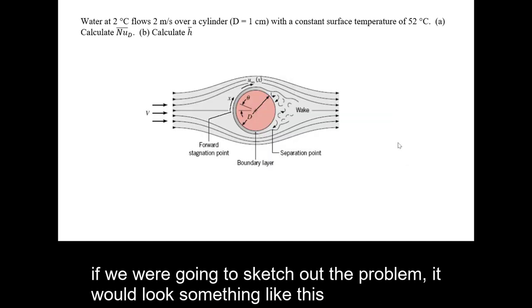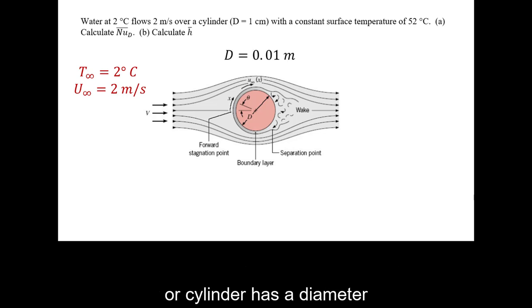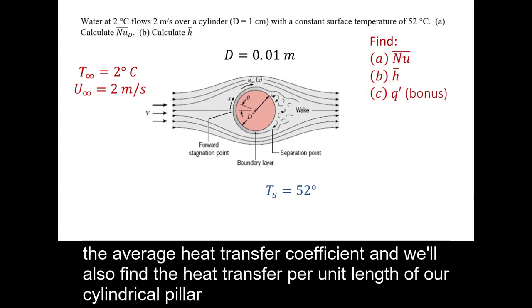If we were going to sketch out the problem, it would look something like this. We see our cylindrical pillar. We have in the free stream a water temperature and a velocity. Our cylinder has a diameter and a surface temperature, and we're asked to find the average Nusselt number, the average heat transfer coefficient, and also the heat transfer per unit length of our cylindrical pillar.